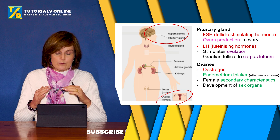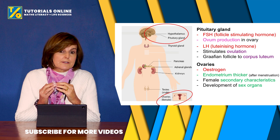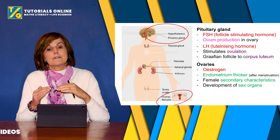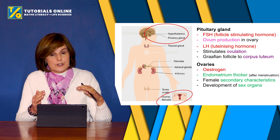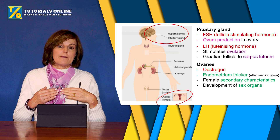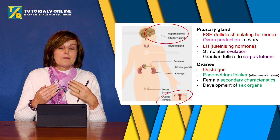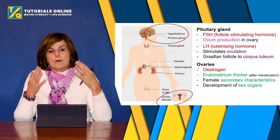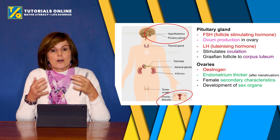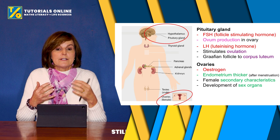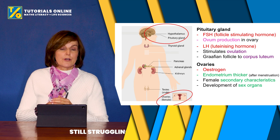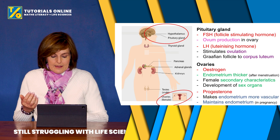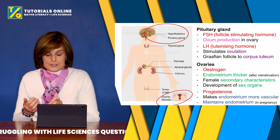Oestrogen's job is to re-establish and thicken the endometrium after menstruation. It also plays a role in the development of female secondary characteristics like smooth skin and the development of breasts, as well as the development of the sex organs for reproduction.